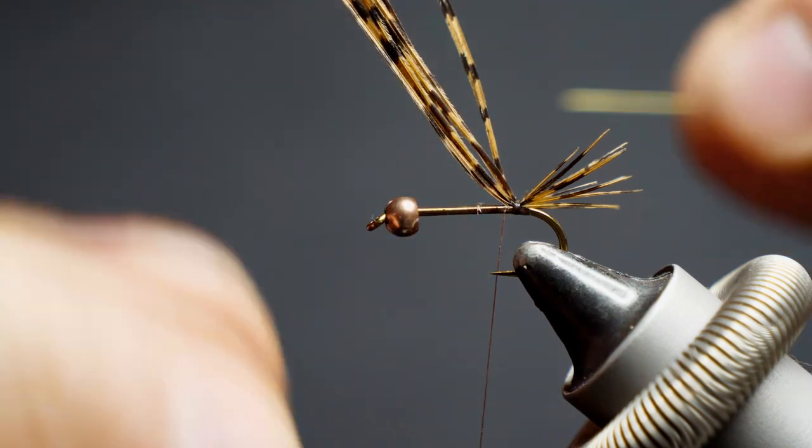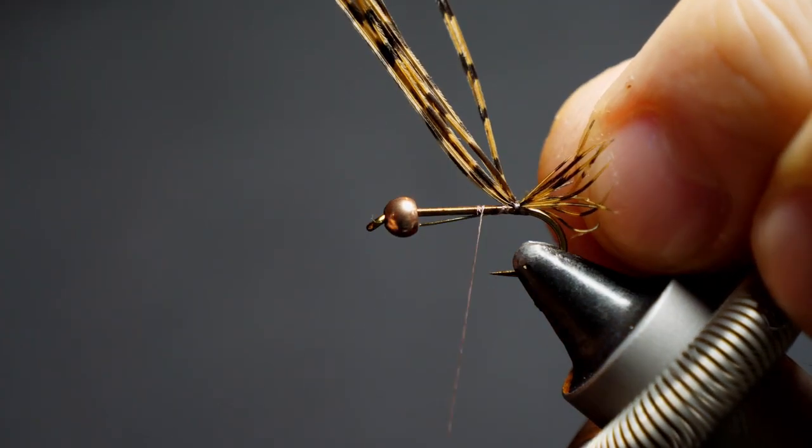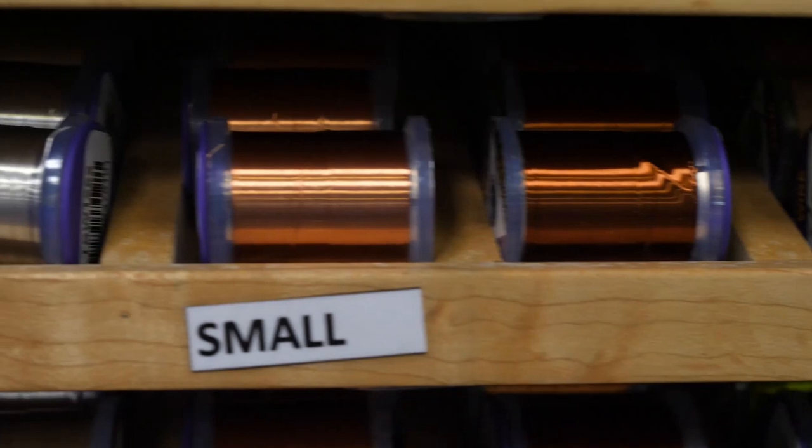So we've got our pheasant tail fibers moving forward from that point, and now what we're going to do is just put a couple wraps, and then we're going to tie in our wire.